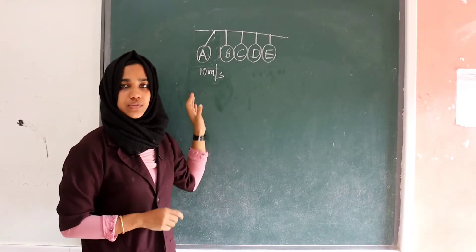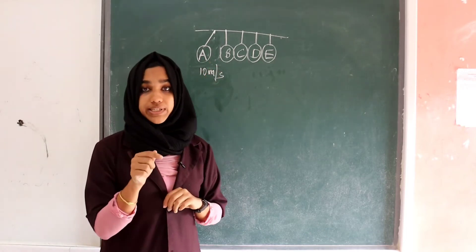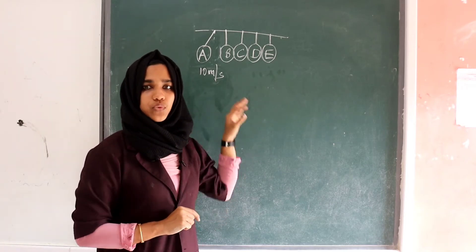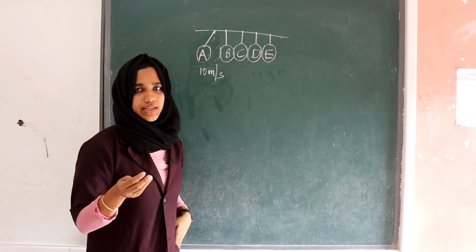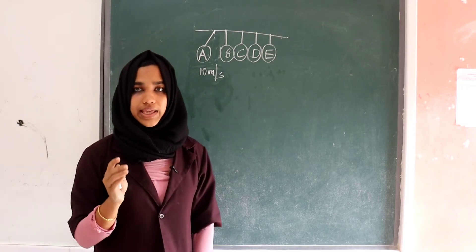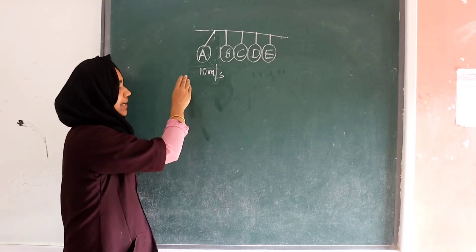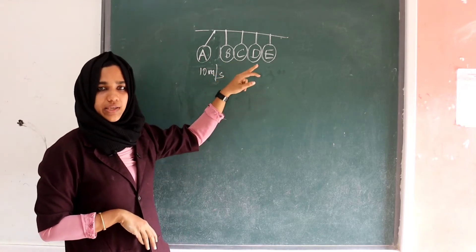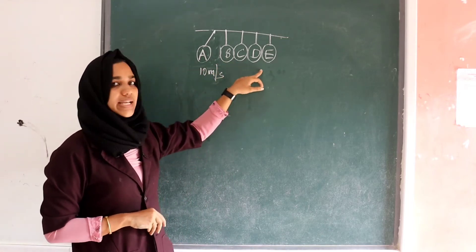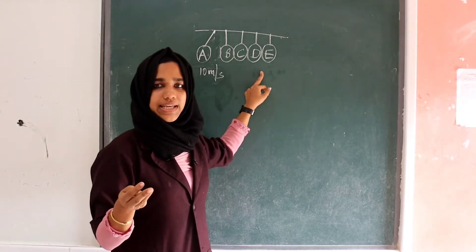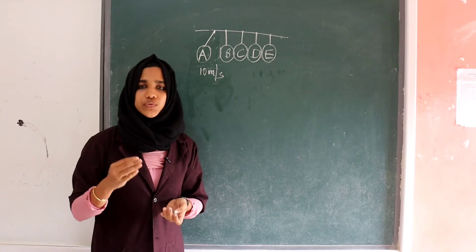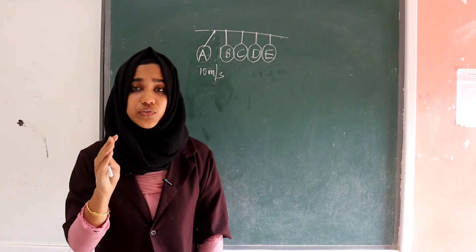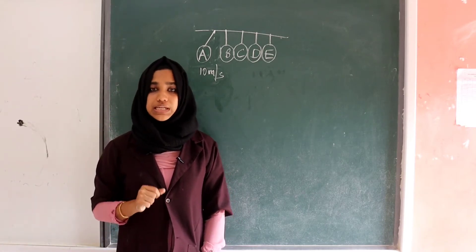Instead of one ball, if I take two balls A and B to one side and release them, then B and A alone move on the other side. If I take A, B, and C to one side, then C, D, and E alone move. This is what is explained by the law of conservation of momentum.